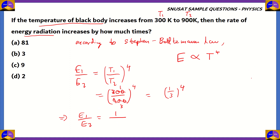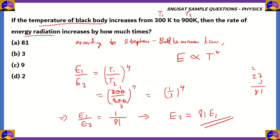E1 over E2 equals 1 over 3 to the power of 4. Now, 3 times 3 is 9, 9 times 3 is 27, and 27 times 3 is 81. So, E1 by E2 is 1 by 81, which means E2 equals 81 times E1. So, the rate of energy radiation increases by 81 times and option A is the right answer. Options of 3, 9, and 2 correspond to powers of 1, 2, and 1 respectively — all incorrect.